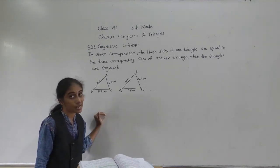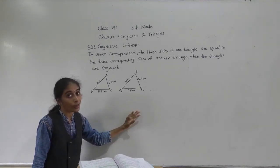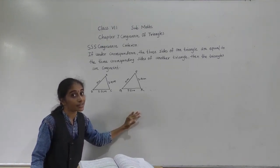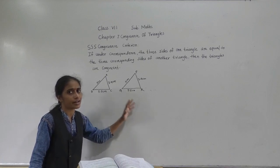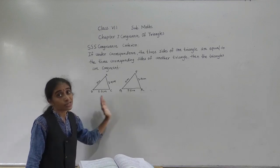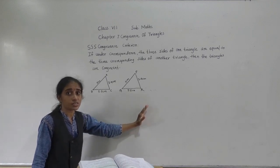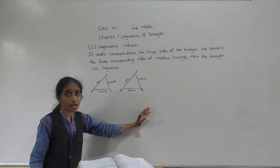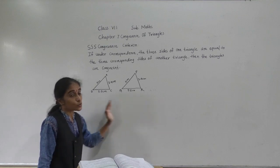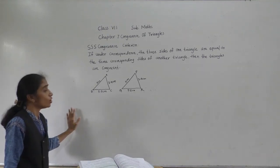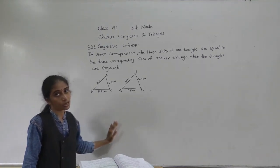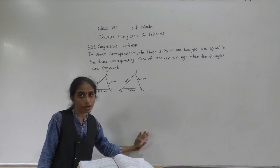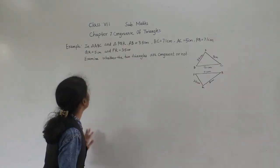So three sides of one triangle are equal to the three corresponding sides of another triangle, then the triangles are congruent. These triangles are congruent by the side-side-side criterion. Corresponding sides of these triangles are equal, so both the triangles are congruent.